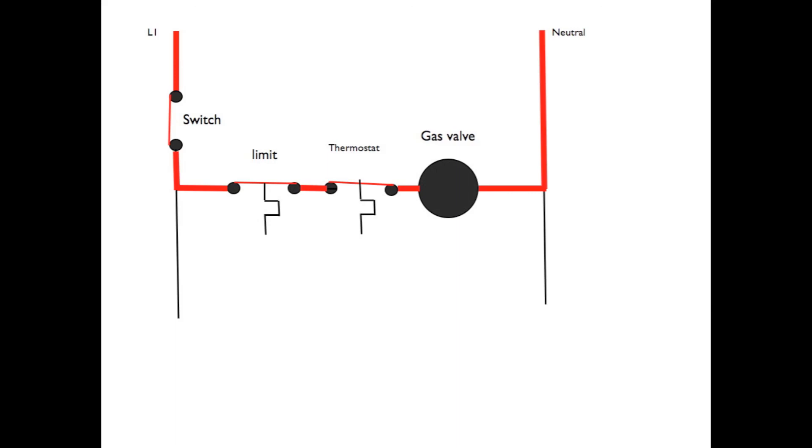So we have the system switch, we have the limit switch which is a safety control, and a thermostat that's an operating control.